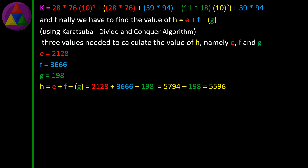H = E + F − G. Substituting the values: 2128 + 3666 − 198 = 5794 − 198 = 5596.